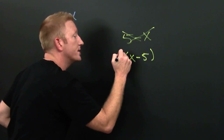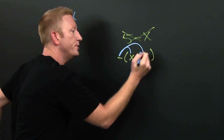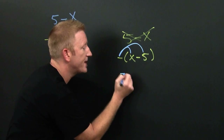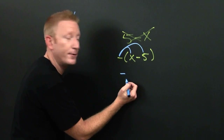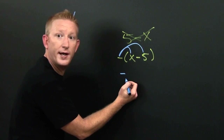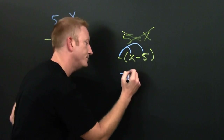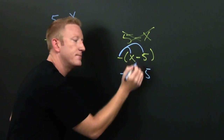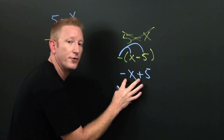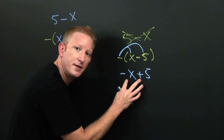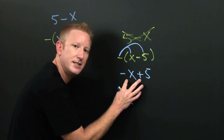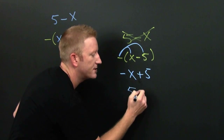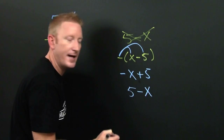We can distribute the negative. It changes the signs of both of those in there. So that's minus — wait for it — x plus five. Because minus and minus make plus, and it changes both of those signs. Now, I can use my commutative property of addition and switch their orders. So then, in short, that's five minus x, just like that. They are the same.